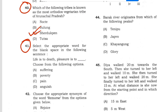Question 41: Select the appropriate word for the blank space in the following sentence. Life is to death as pleasure is to pain. Answer: option C.